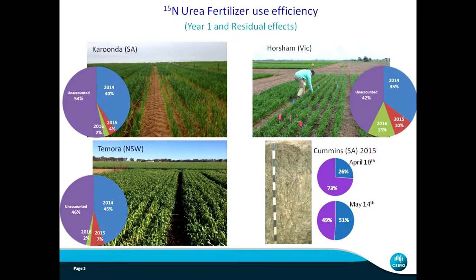We know that not all nitrogen applied as urea, ammonium, or nitrate goes into the crop - there is some fertilizer efficiency variation. What was surprising was that the blue part of the pie charts at the three different sites showed that the urea nitrogen we put in had only 35 to 45 percent taken up by the first crop. So efficiency of fertilized nitrogen was less than 50 percent. Even in well-managed research plots of two to eight square meters, the efficiency was low.